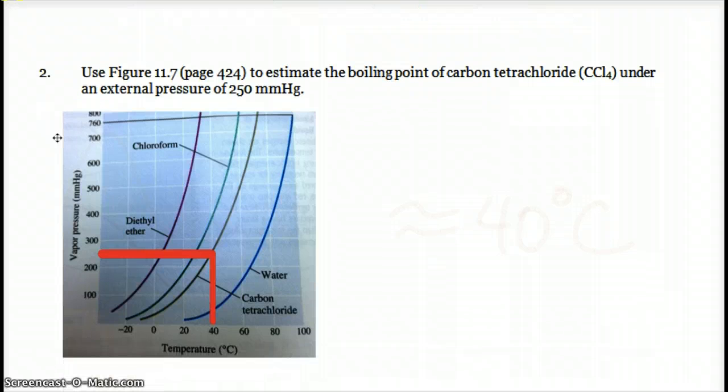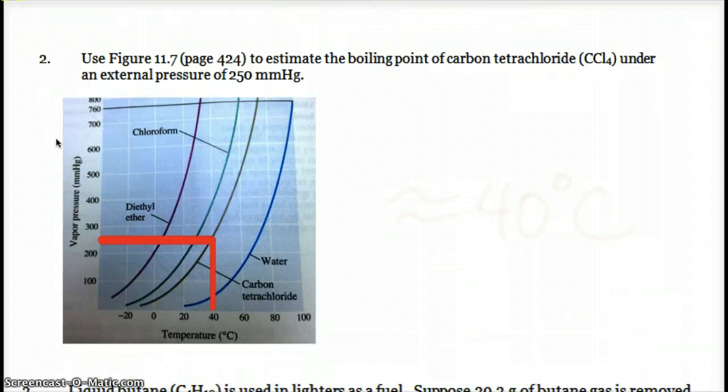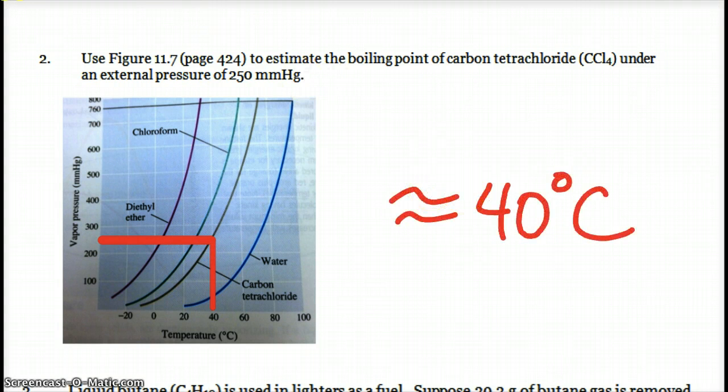And then one last question here. This was a diagram from our book. Estimate the boiling point of carbon tetrachloride if the pressure was 250 millimeters of mercury, so well below normal pressure. And if you read the graph and go to the line for carbon tetrachloride, you would say that's about 40 degrees Celsius.